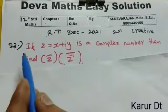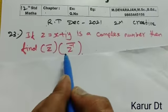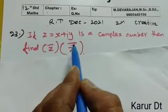Clearly two more questions. Question number 23. If Z equals X plus i y is a complex number, then find Z bar into Z inverse whole bar.